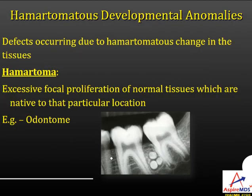There can be hamartomatous developmental anomalies — anomalies where defects occur due to hamartomatous changes. Hamartoma is excessive focal proliferation of normal tissue native to that particular region. For example, if within the jaw you have development of a tooth-like structure, it is a hamartoma. Example is odontoma.